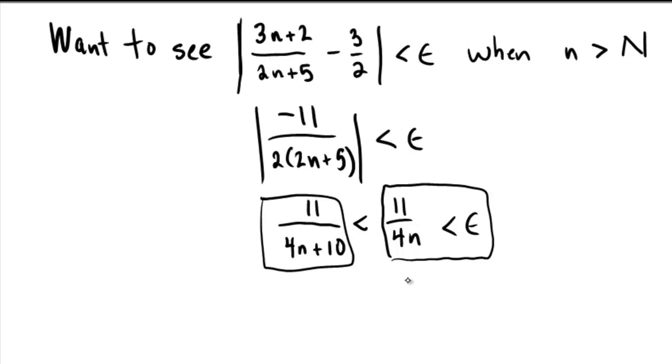And this leads to a much more natural solution for the capital N. If we reciprocal both sides here, we would get 4n over 11 is bigger than epsilon. And that would force n to be larger than 11 epsilon over 4.